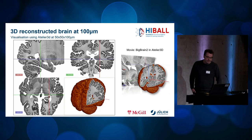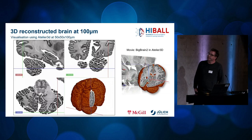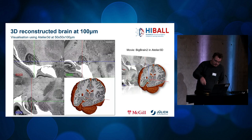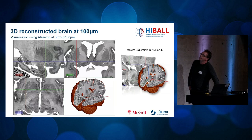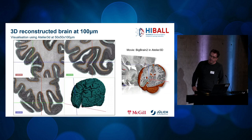Here we see the reconstructed dataset on the left side in Atelier 3D. Notice the much better quality. You can see how smooth the layer 1 boundary is, and especially the subcortical regions are now much better resolved than in BigBrain 1, which will be shown later in detail.